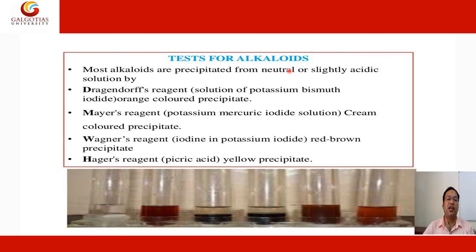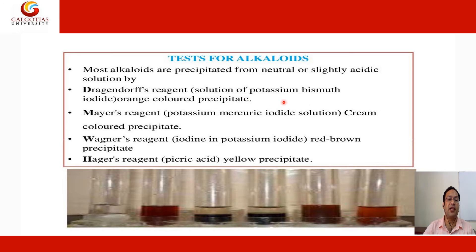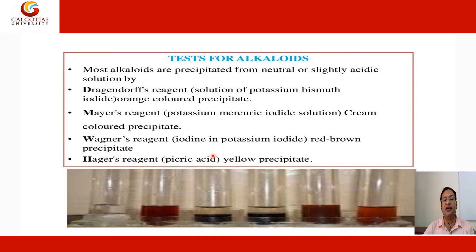Tests for alkaloids: Most alkaloids are precipitated from neutral or slightly acidic solution by various reagents. Dragendorff's reagent contains potassium bismuth iodide and gives an orange-colored precipitate. Mayer's reagent — potassium mercuric iodide solution — gives a cream-colored precipitate. Wagner's reagent — iodine in potassium iodide — gives a red-brown precipitate. Hager's reagent — picric acid solution — gives a yellow precipitate.